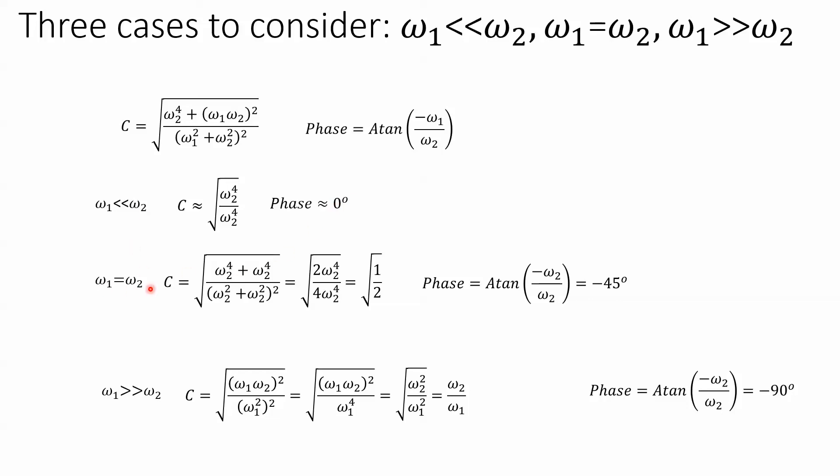When the frequencies are equal to each other, that reduces to the square root of 1 half. And if ω₂ and ω₁ are equal to each other, that's minus 1, and we get a phase of minus 45 degrees.